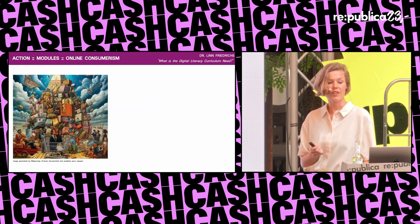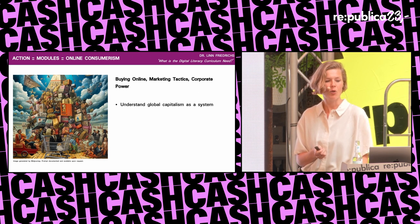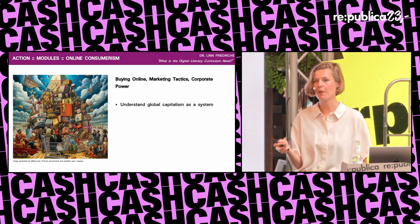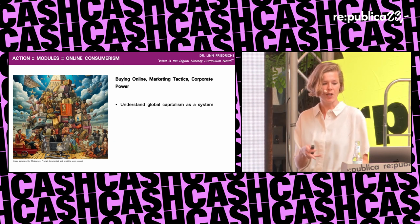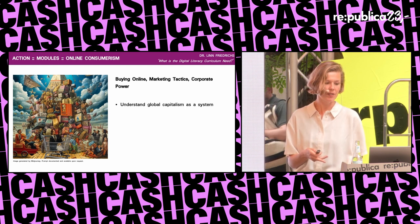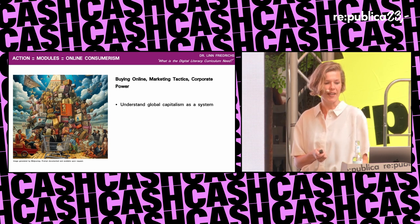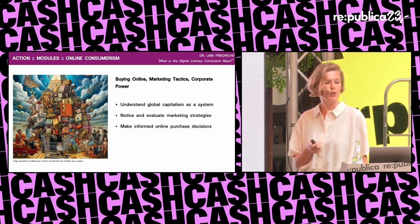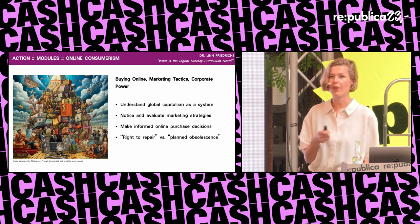Module six: online consumerism. In this module, students learn how global capitalism currently operates in the digital realm and impacts what they become interested in or decide to consume. Concepts like lobbyism, platform economy, and corporate power may seem abstract, but they become relevant when we uncover marketing strategies like dynamic pricing, payback points, and online competitions. We want to make informed decisions — so should our students. This is also the place to analyze the right to repair and how it conflicts with planned obsolescence.